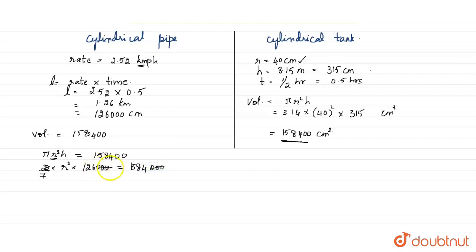Canceling three zeros, r² = (158,400 × 7) / 126. This equals 4, which implies r = 2 centimeters.